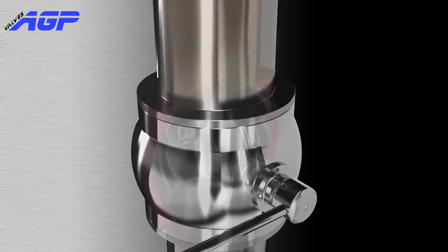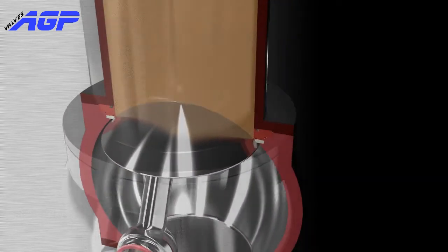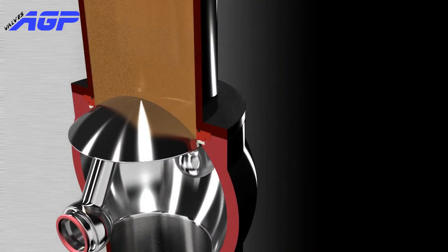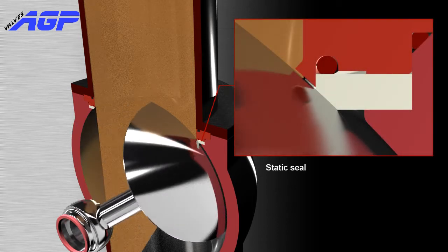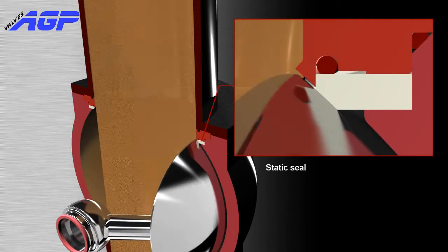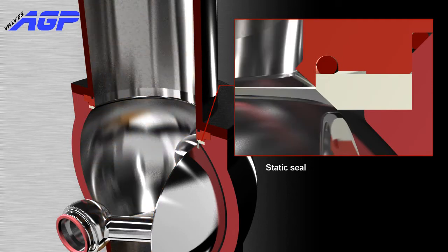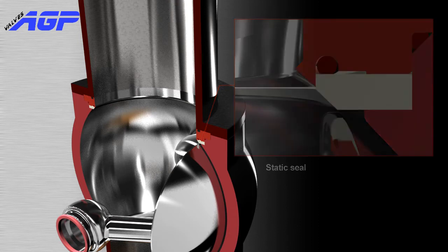The basic model of a segment bore valve has a static seal. While opening the valve, the seal is continuously in contact with the segment. Static seals can be used for non-abrasive powders, liquids, and gases, under vacuum or pressure.